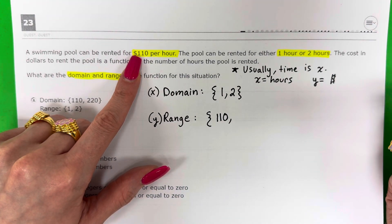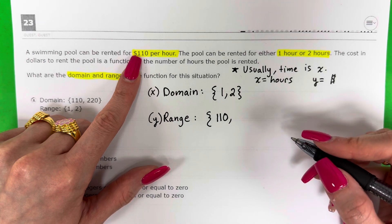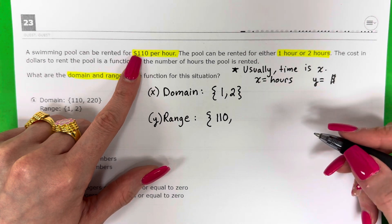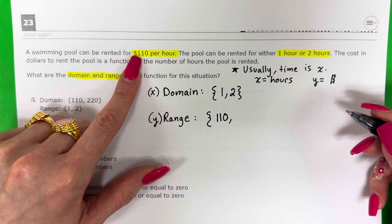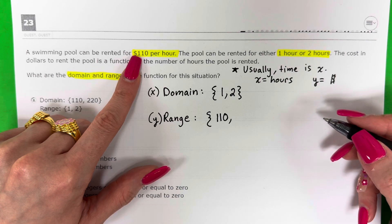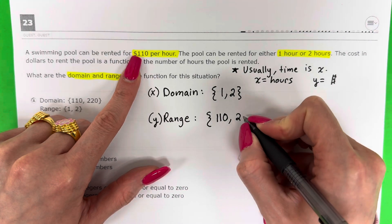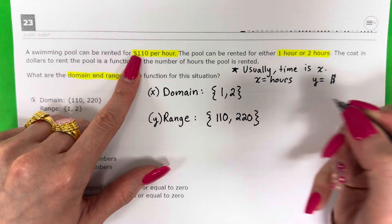For 2 hours, it's $110 plus another $110. So what is 110 plus 110? 220. That would be my range.